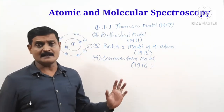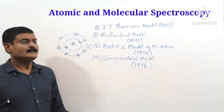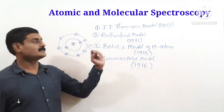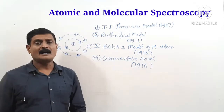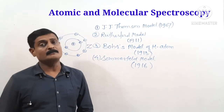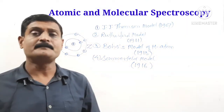This model is known as the JJ Thomson model, but it suffers from many drawbacks, so this model was discarded. The second model we have to discuss is the Rutherford model of the atom.